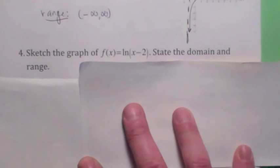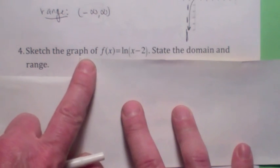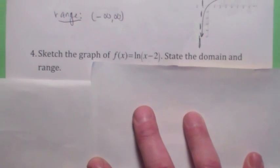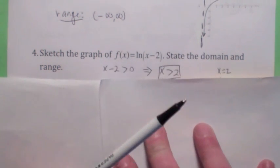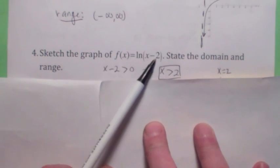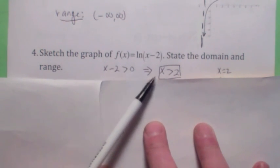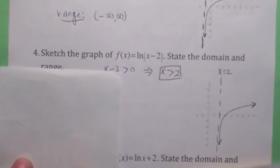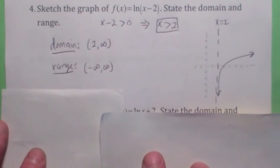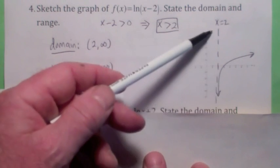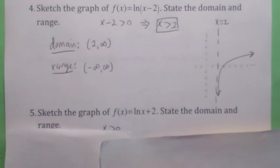This one: f of x equals the natural logarithm of x minus 2. Before we even graph it, can you tell me what the domain is? What's inside the logarithm, x minus 2, has to be greater than 0. Add 2 to both sides and you get x is greater than 2. Sure enough, the graph is consistent — when you shift the graph 2 to the right, you've shifted the vertical asymptote 2 to the right. So the domain is 2 to infinity, and the range is negative infinity to infinity.